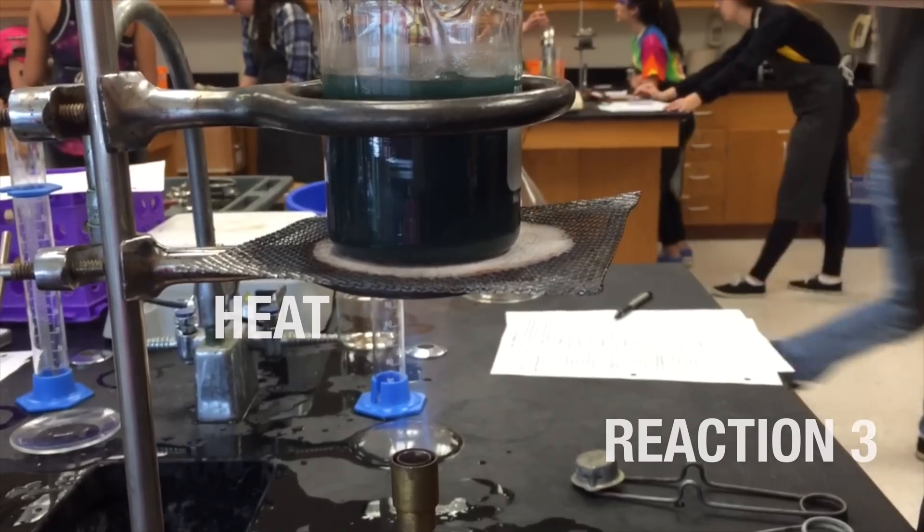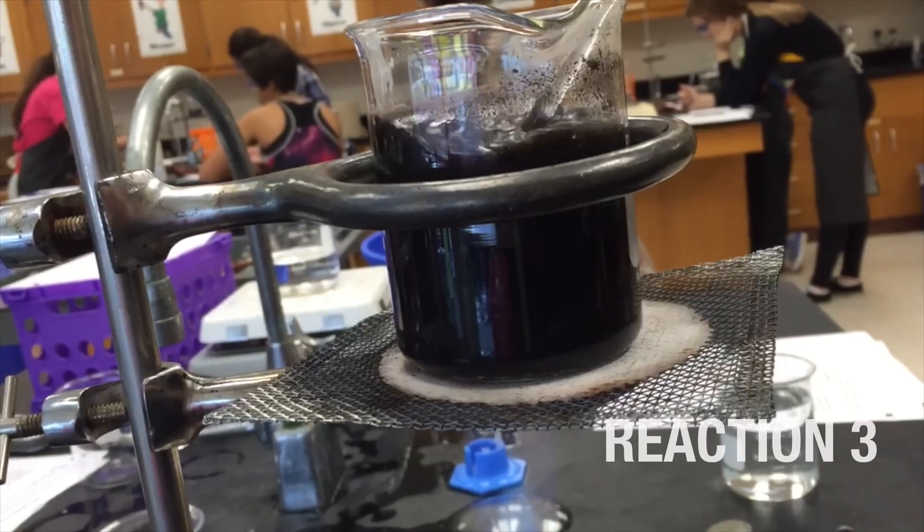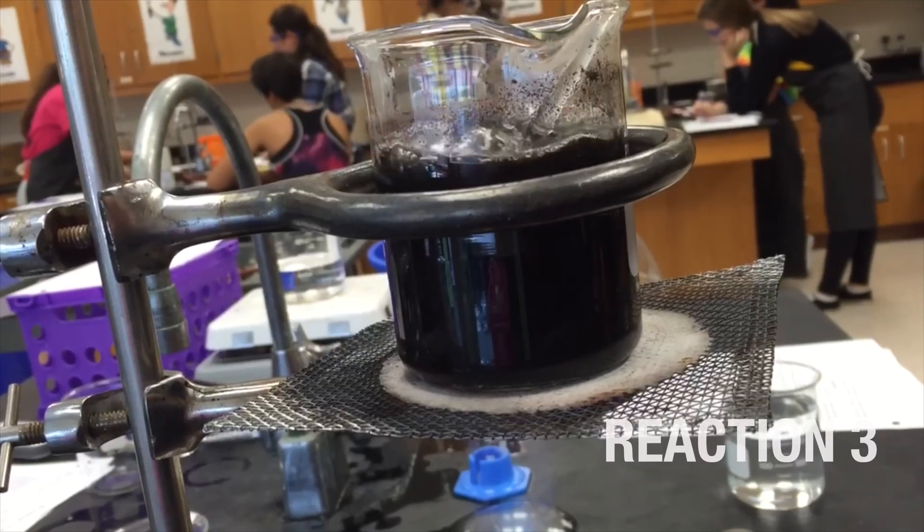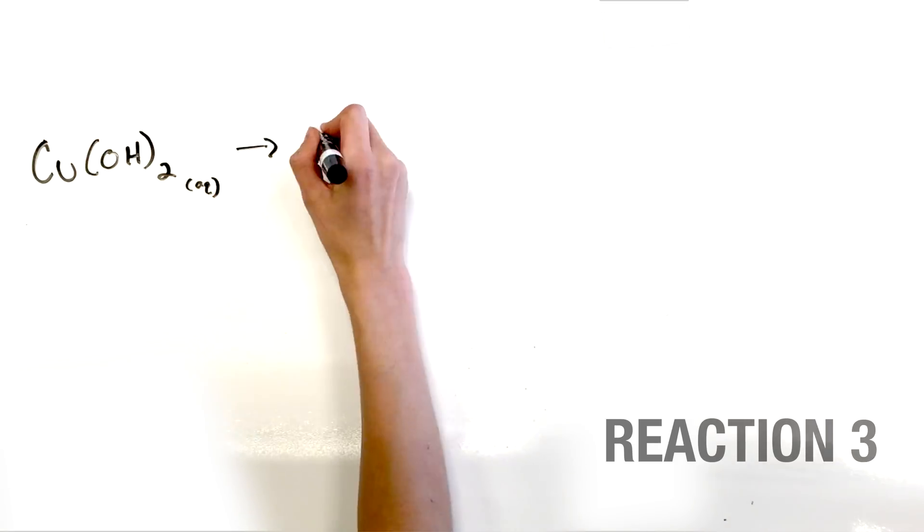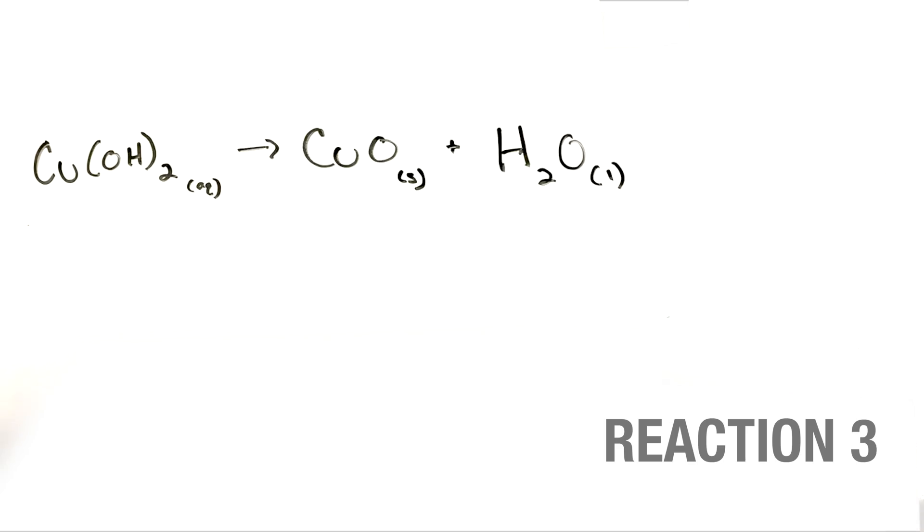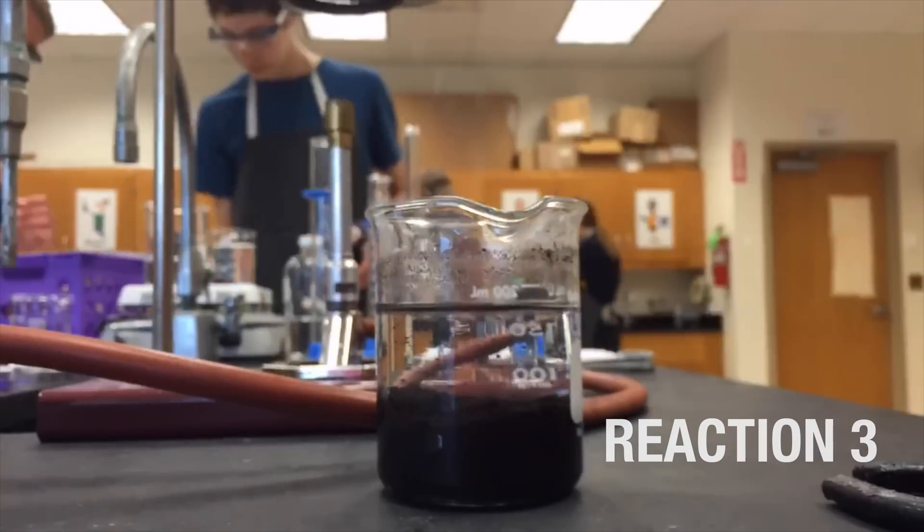In reaction 3, we used heat, a lot of heat, to turn our blue mixture into a black precipitate and clear liquid top. The copper(II) hydroxide separated into copper(II) oxide, the black precipitate, and water, the clear liquid.